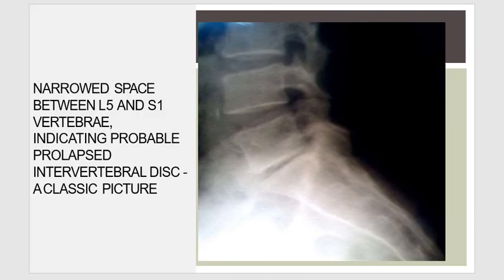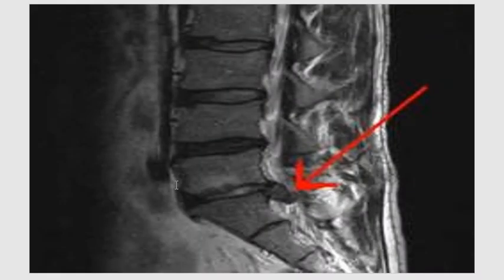This image shows a narrow space between L5 and S1 indicating probable prolapsed intervertebral disc. This MRI image shows the disc prolapse.